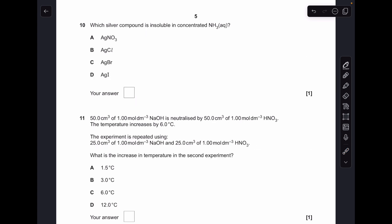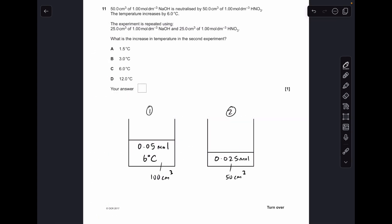Number 10, which silver compound is insoluble in concentrated aqueous ammonia? And of course, it's D, silver iodide.